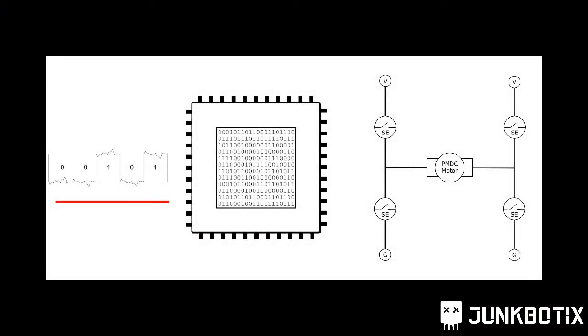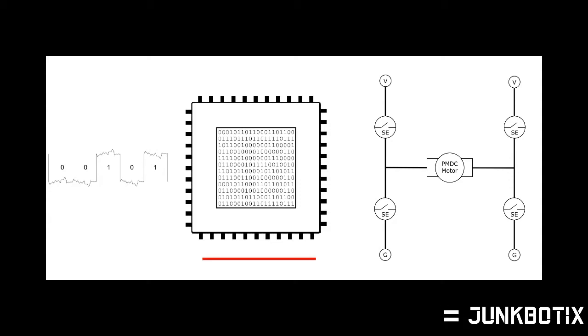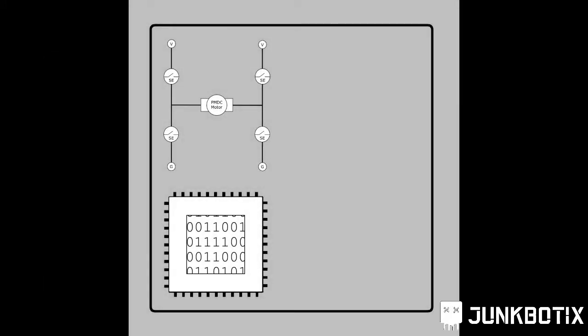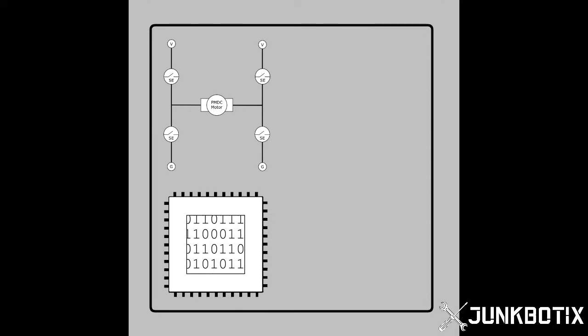For an H-bridge to become a motor controller, there needs to be something in between the robot's embedded control system and the H-bridge. Taking in some form of control signal, it will interpret that signal to control the speed and direction of the motor via its own internal H-bridge. This interpretive intelligence and integrated functionality defines what a motor controller is, setting it apart from a basic H-bridge.